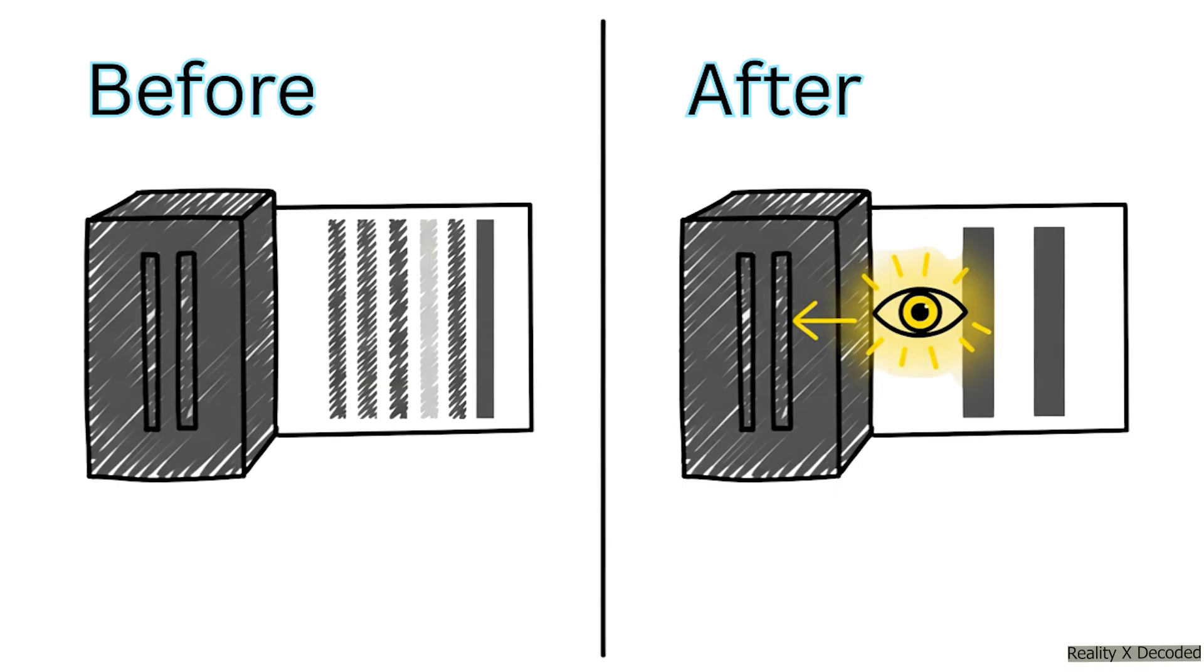And what are you left with? Two clean stripes, exactly what you'd expect from tiny bullets. The very act of looking at it forced the electron to stop being a wave and start acting like a particle.